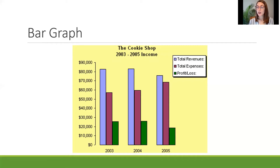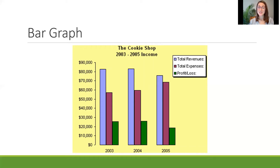You'll notice we have three different colors of bars, so we need to figure out what each bar means. The blue bars are the total revenues, the purple bars are the total expenses, and the green bar represents any profit or loss. For example, in 2003, if we look at the blue bar we see it falls just above eighty thousand but not quite to ninety thousand — maybe a little less than halfway. While we can't get an exact reading, you could probably guess this is close to around eighty-three thousand dollars. That was their total revenue for 2003.